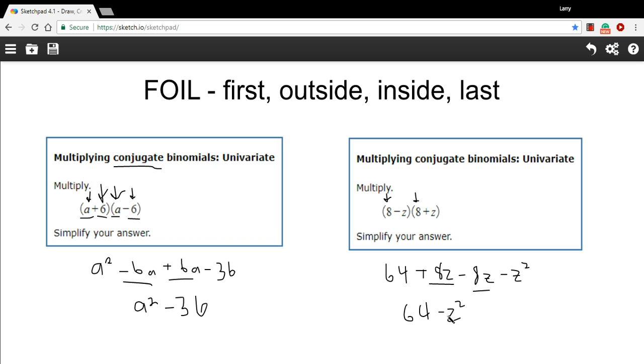So you probably see the pattern here. What happens when you multiply conjugates is you take the first term and you just square it. And you take the second term and square it. And you put a minus sign in between. So you could write that as a squared minus b squared equals a plus b times a minus b. And this is what's called the difference of squares. So that's the pattern we're seeing here when we multiply conjugate binomials.